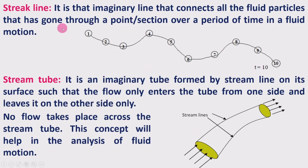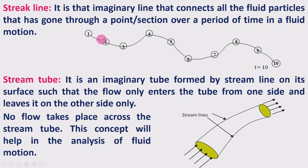Next is the streak line. It is that imaginary line that connects all the fluid particles that have gone through a point or a section over a period of time in a fluid motion. If you consider one point or one section at the initial part of the fluid flow, a number of fluid particles pass through that point, and if you connect all those particles together, the line formed is called a streak line.